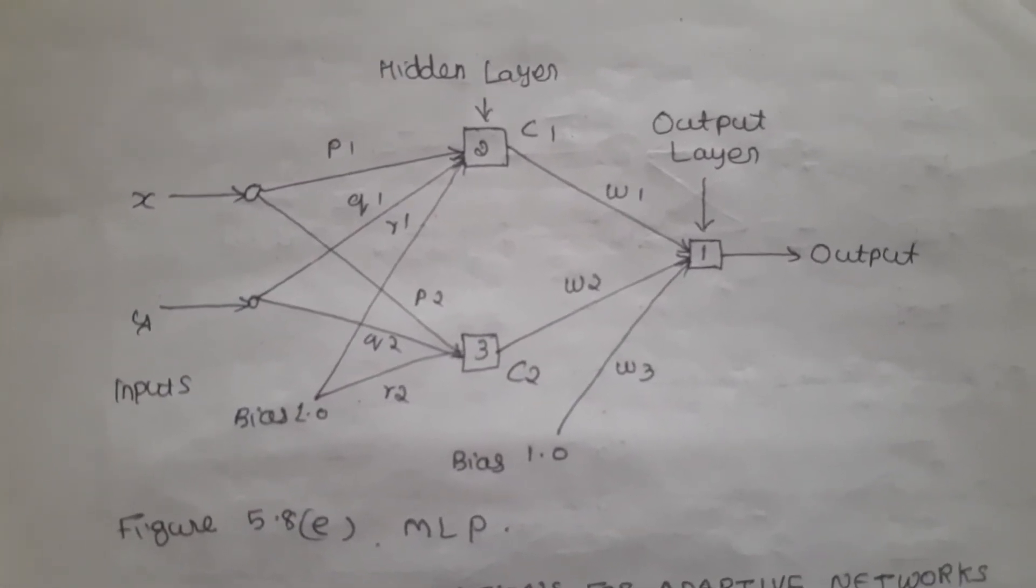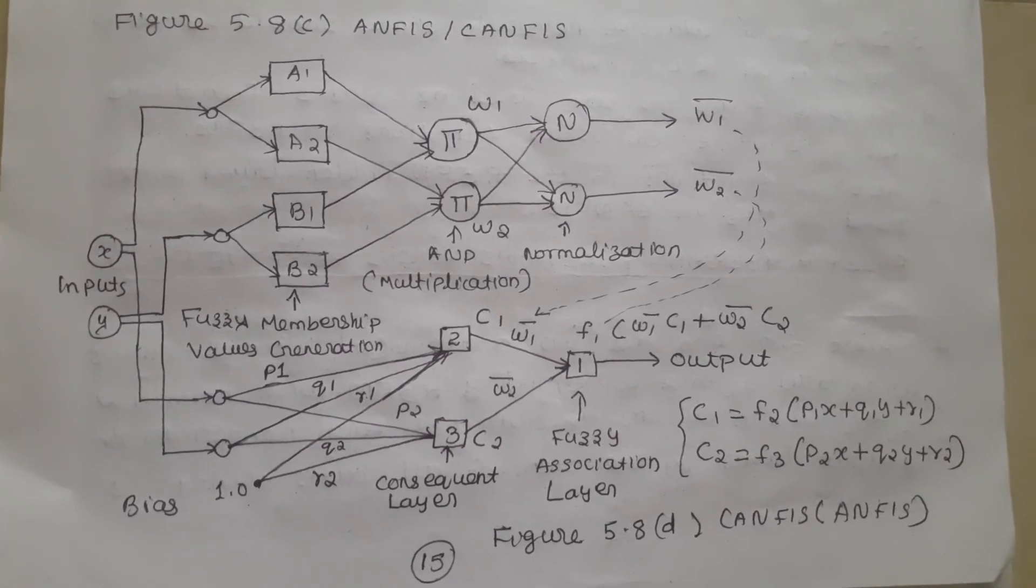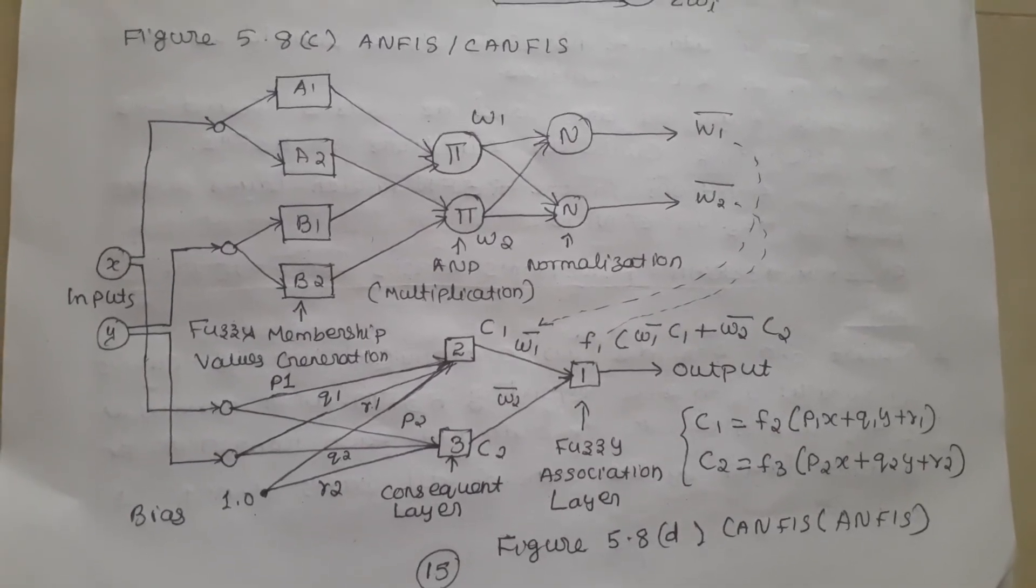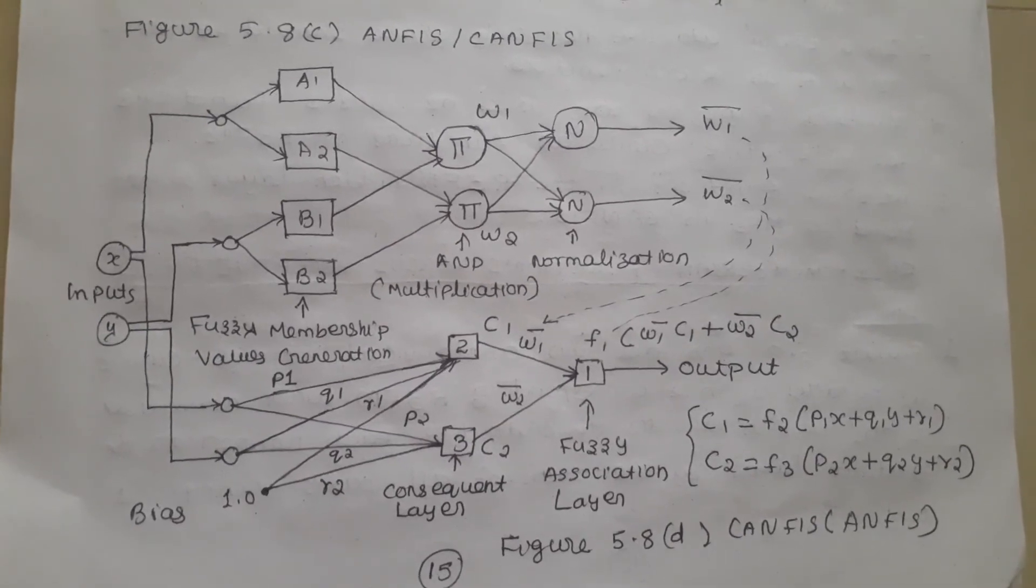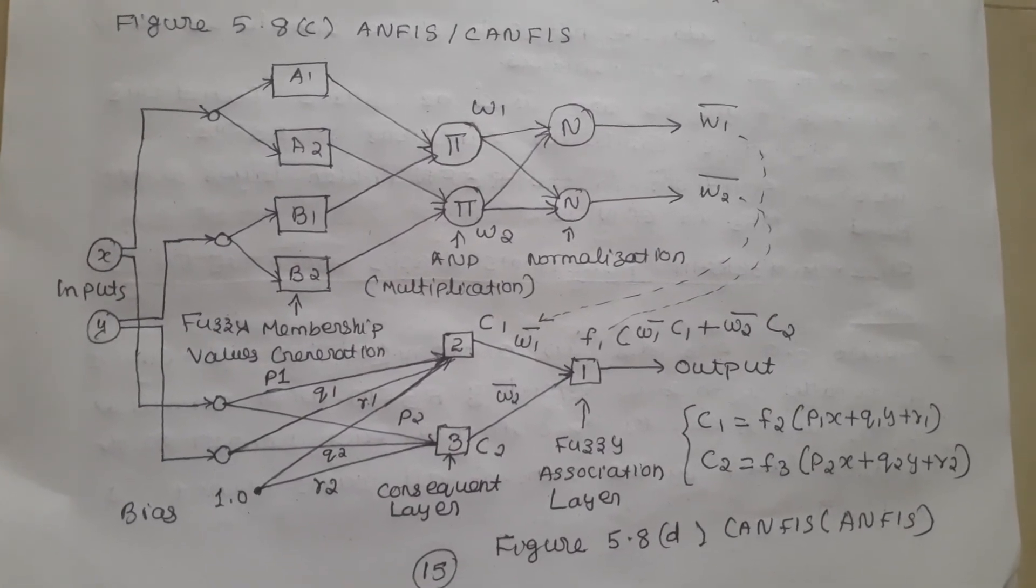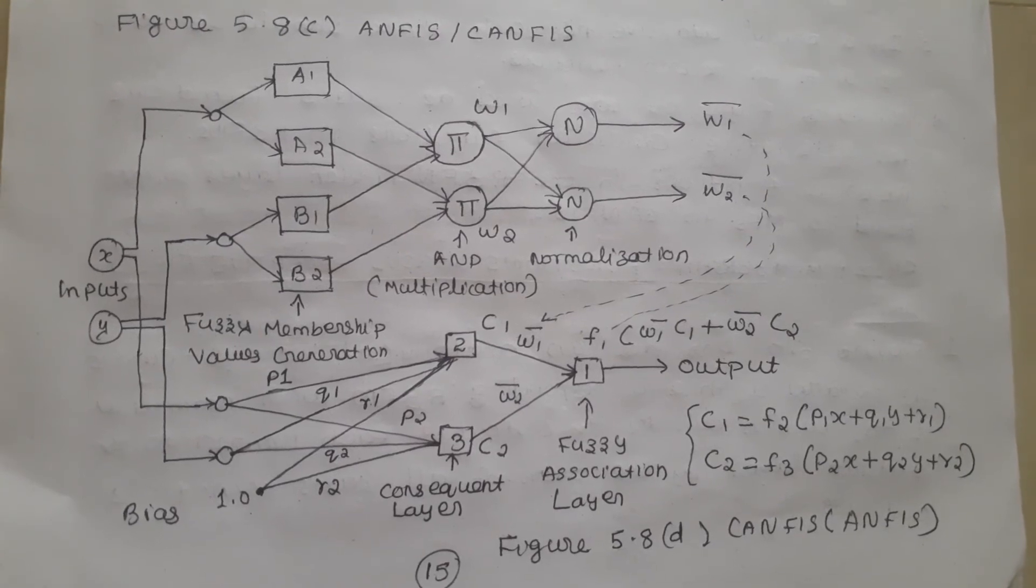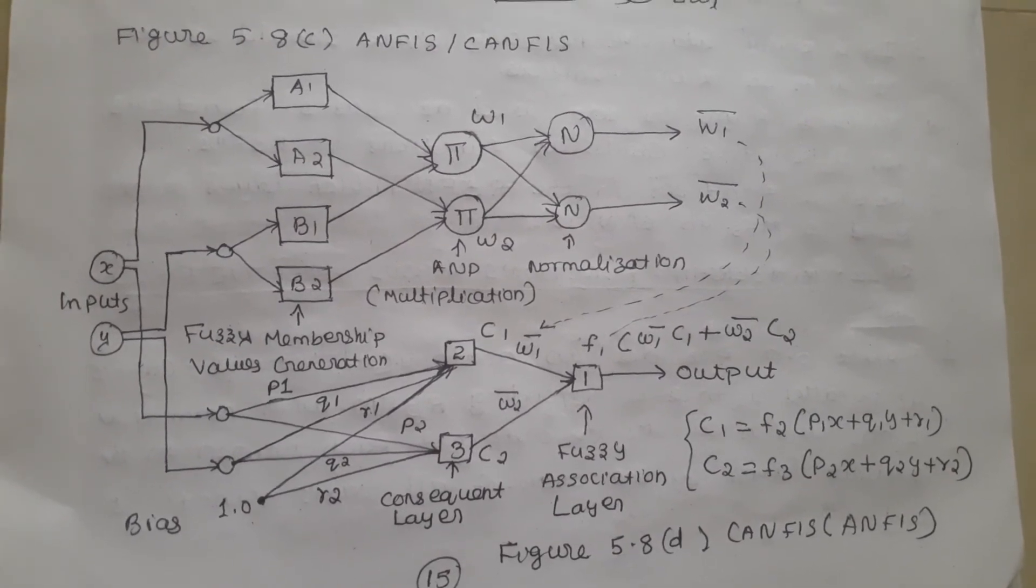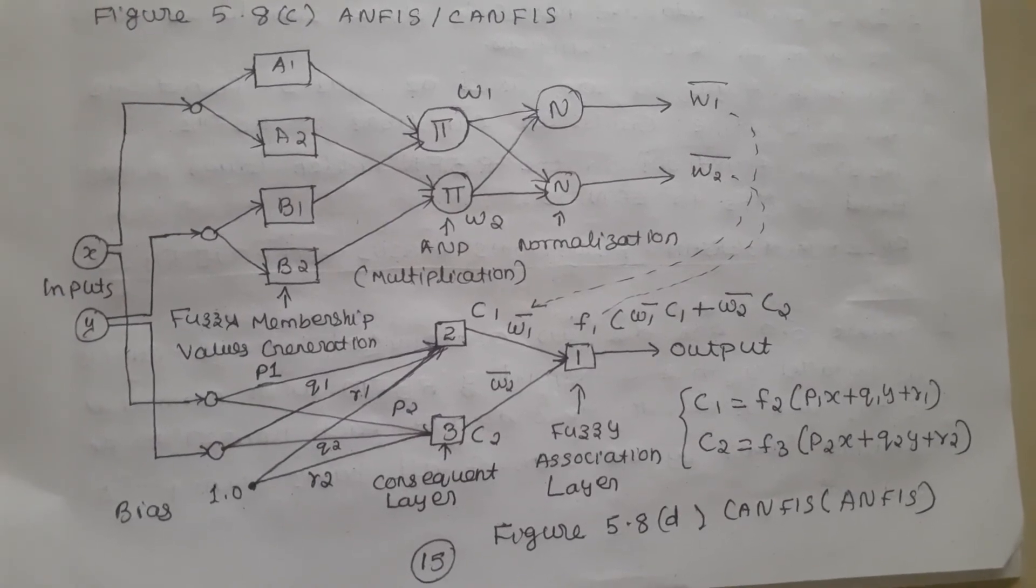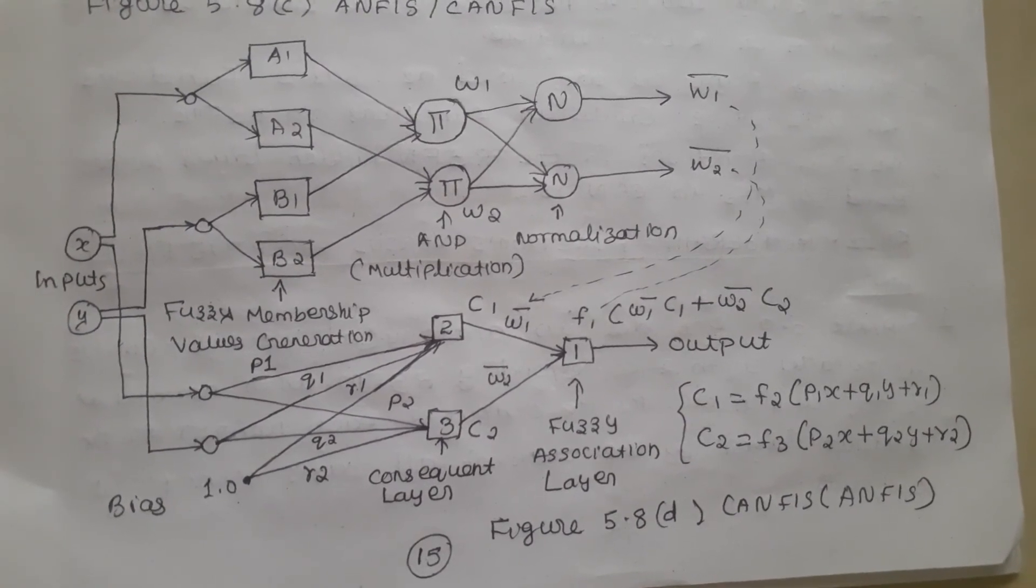In this scan phase, we have used ANFIS as well as multi-layer perceptron. This W1 bar and W2 bar which we got from the ANFIS that is from above figure, that is passed to the second part W1 bar and W2 bar. C1 is generated like P1 X plus Q1 Y plus R1 and C2 is generated as P2 X plus Q2 Y plus R2 in the consequent layer. For the fuzzy association layer, we will do W1 bar C1 plus W2 bar C2.